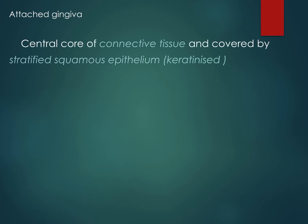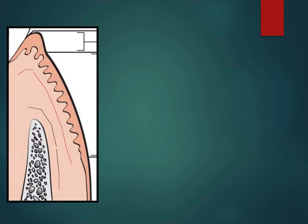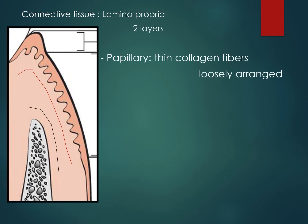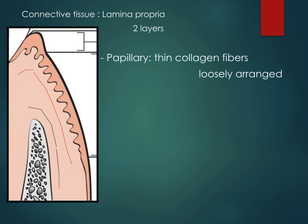Attached gingiva has a center core of connective tissue which is covered by stratified squamous epithelium, which is keratinized. The connective tissue is composed of collagen type fibers of type 1, proteoglycans, vessels, and fibroblasts. The connective tissue has a lamina propria of two layers: one is the papillary layer and the other is the reticular layer.